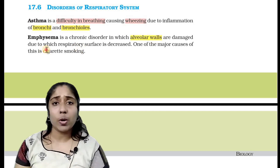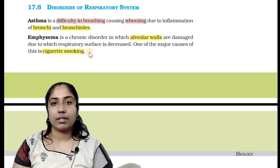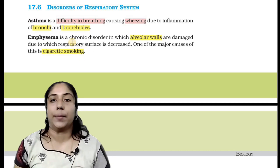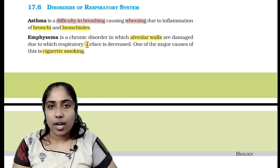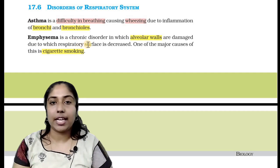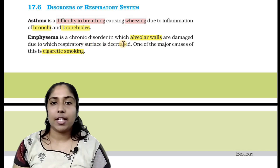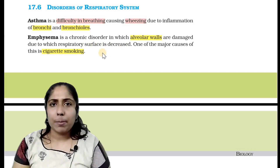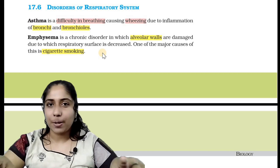In emphysema, there are a lot of chemical molecules involved — nicotine, alcohol, carbon monoxide, etc. The alveolar wall is made of squamous epithelium. The diffusion membrane thickness is less than 1 mm, which is important for gas exchange.